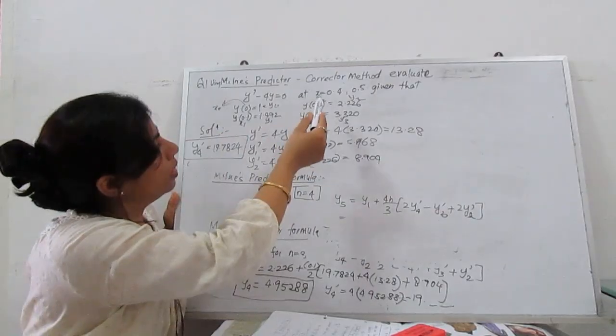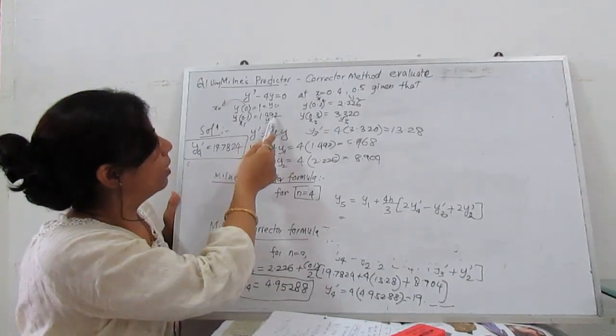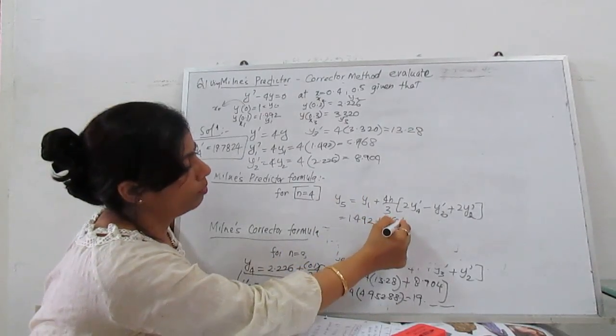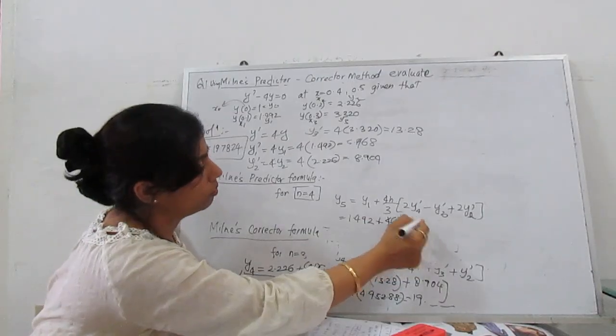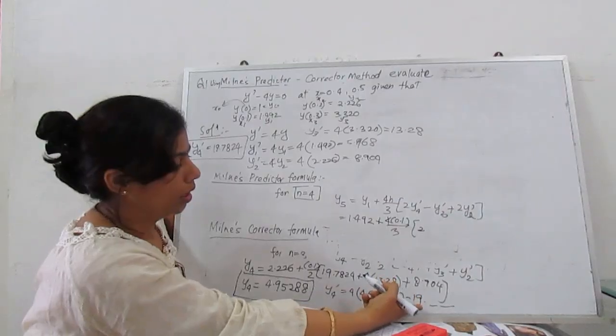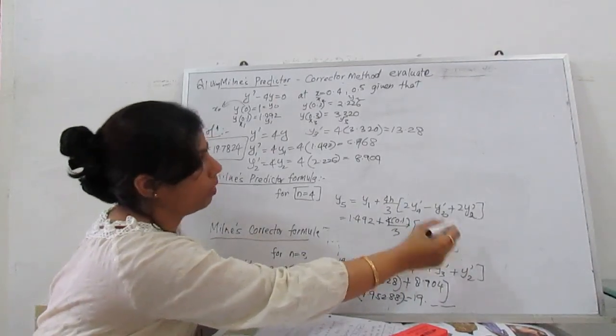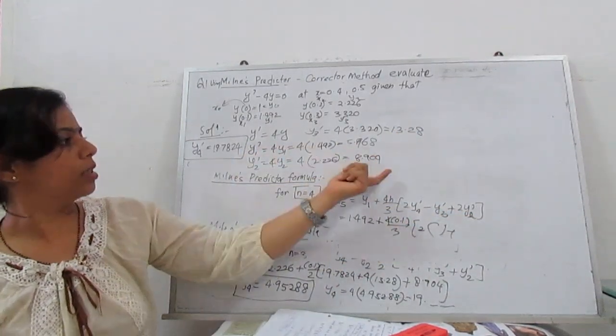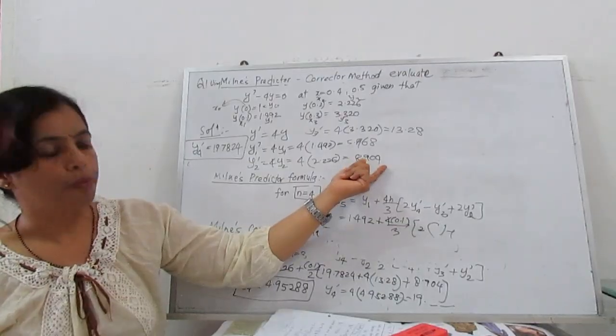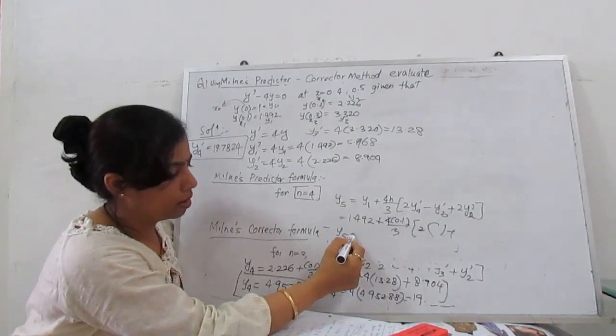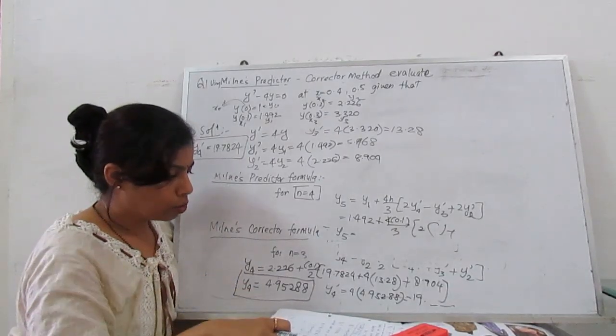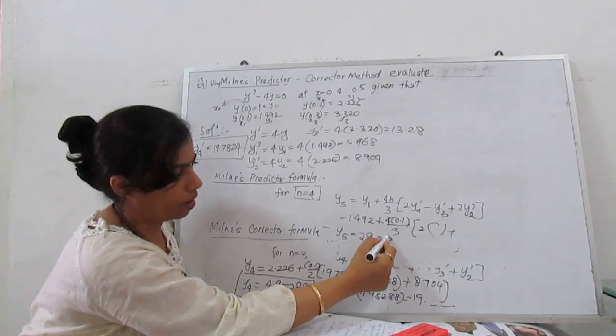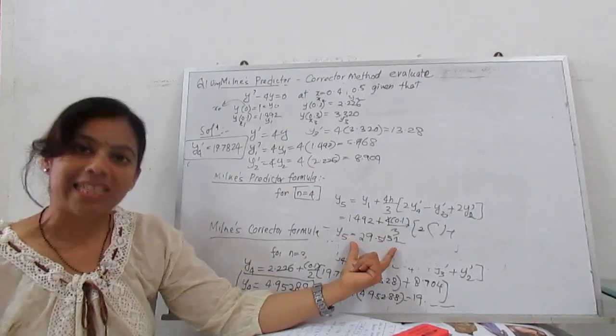Next substitute everything. y₁ is at x = 0.1, which is 1.492, plus (4 × 0.1/3)[2 times y'₄, plus y'₃, which is 13.28, plus 2 times y'₂, which is 8.904]. When you calculate, your y₅ is 29.5152.